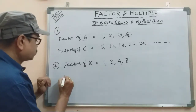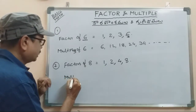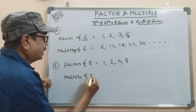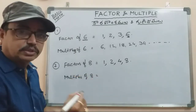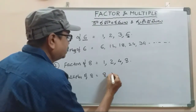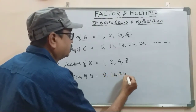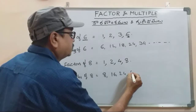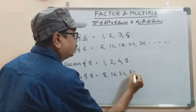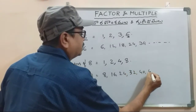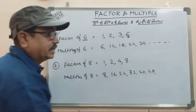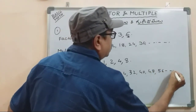Multiples of 8: 8 times 1 is 8, 8 times 2 is 16, 8 times 3 is 24, 8 times 4 is 32, 8 times 5 is 40, 8 times 6 is 48, and so on.